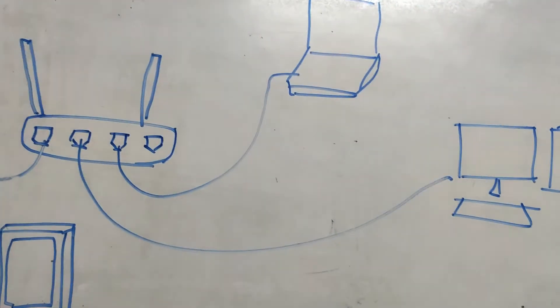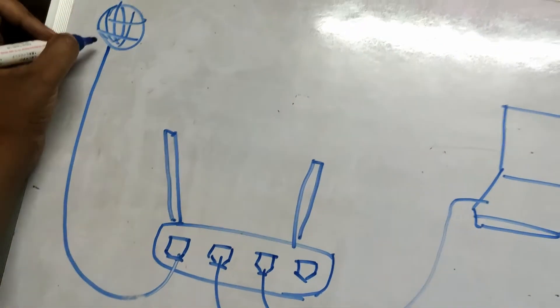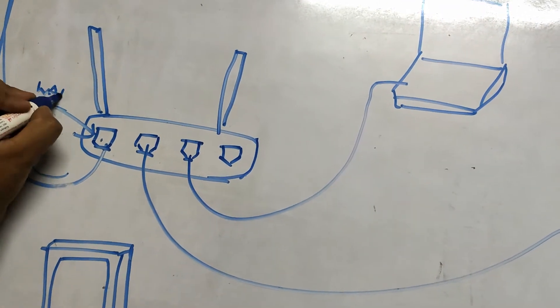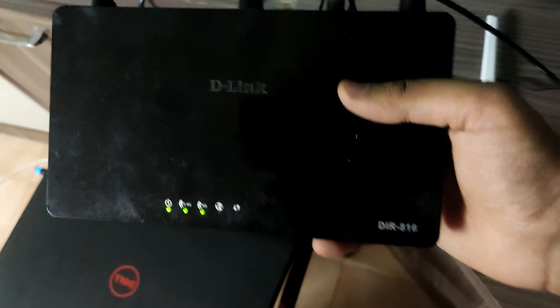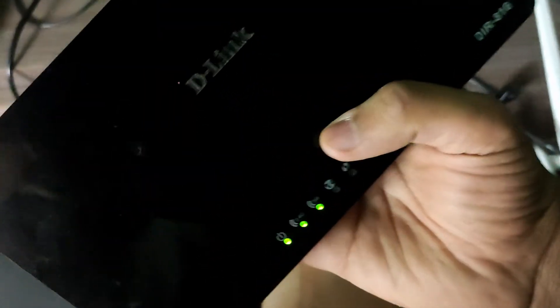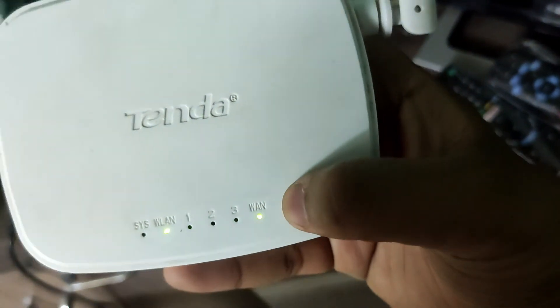So just ignore my drawing for a second — this represents our network provider, which is the internet. From this internet we are connected to our WAN port, and your devices are connected like this. What if this port fails? As you can see, the internet light of this router isn't showing up. I've connected it on my WAN port and it's not working. This is my other router which I accidentally bricked.